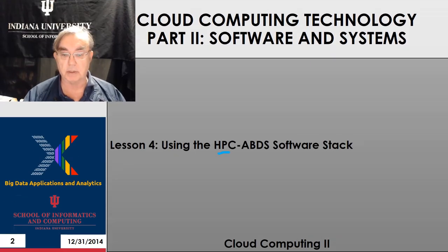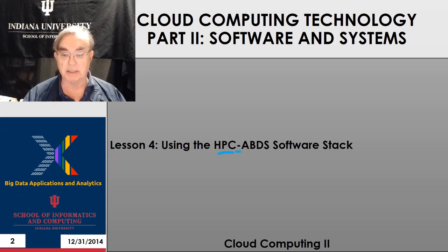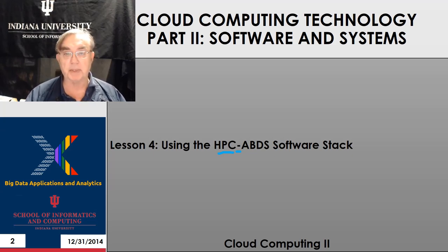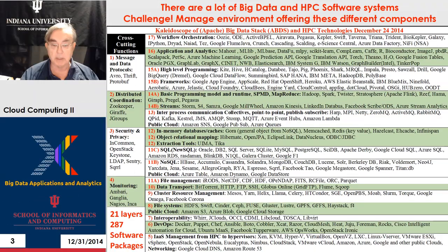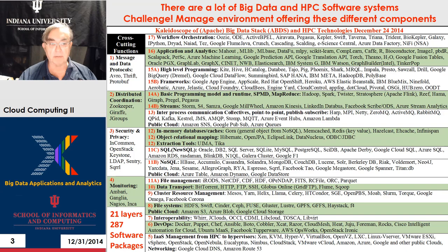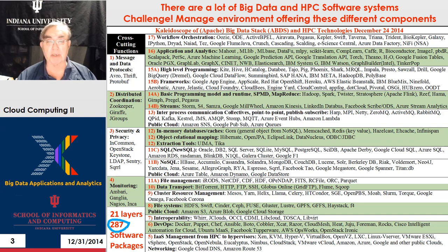This software is called HPC-Apache Big Data Stack, that's ABDS. This is a concept we came up with about a year ago. Here it is — the Apache Big Data Stack. We see 287 pieces of software, arranged in layers.